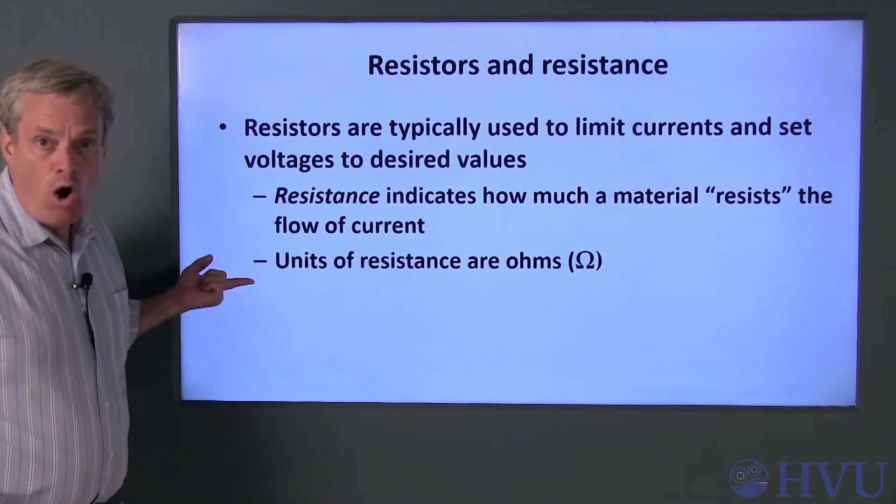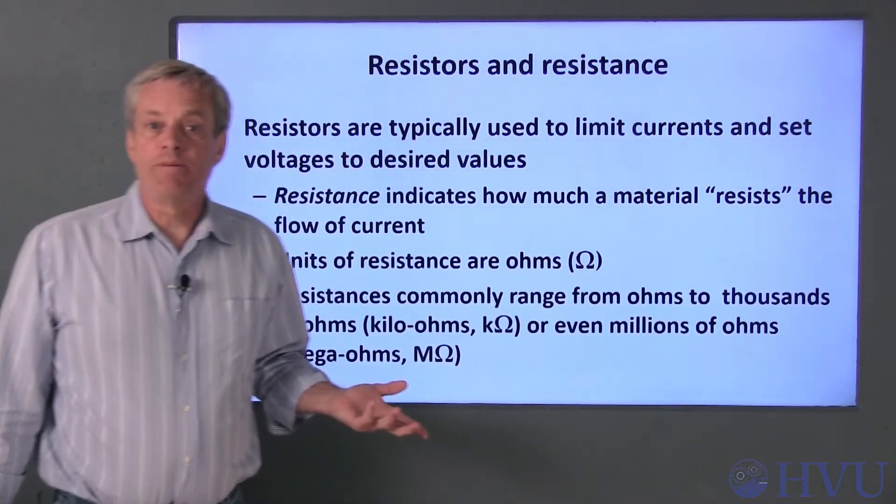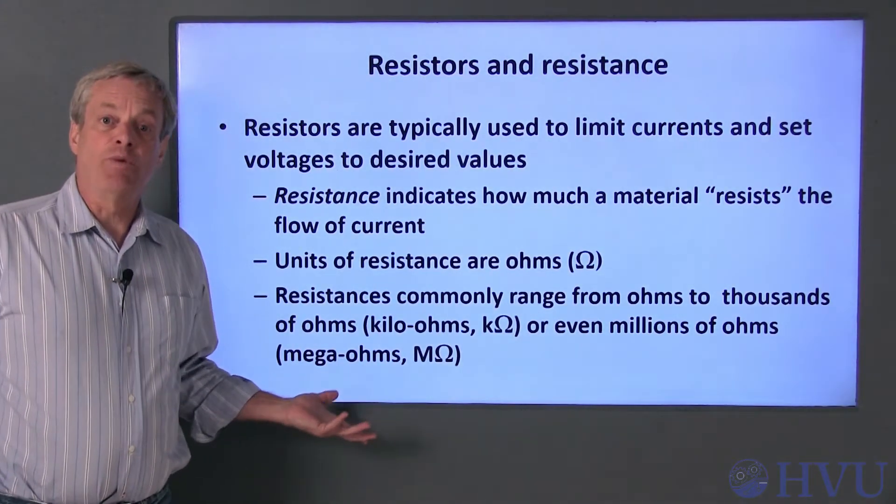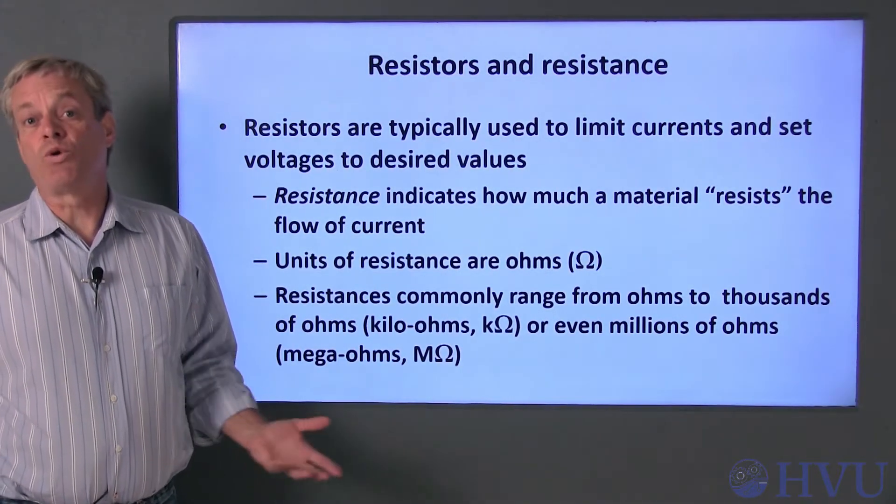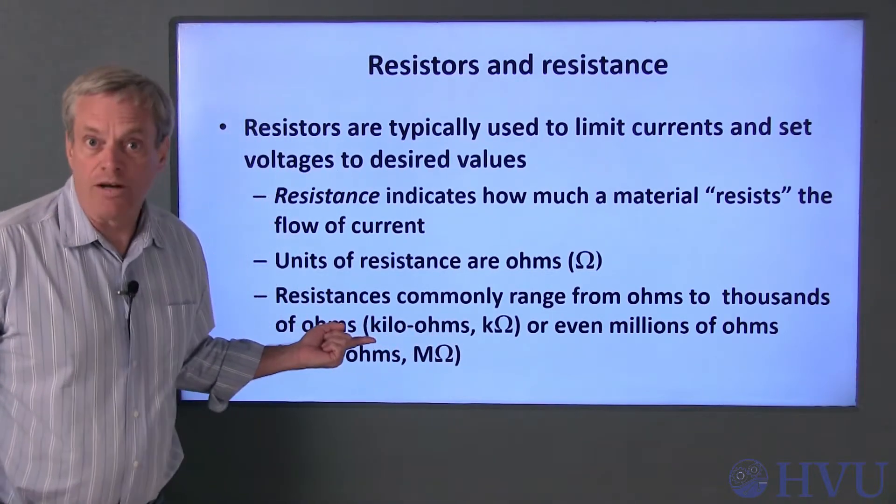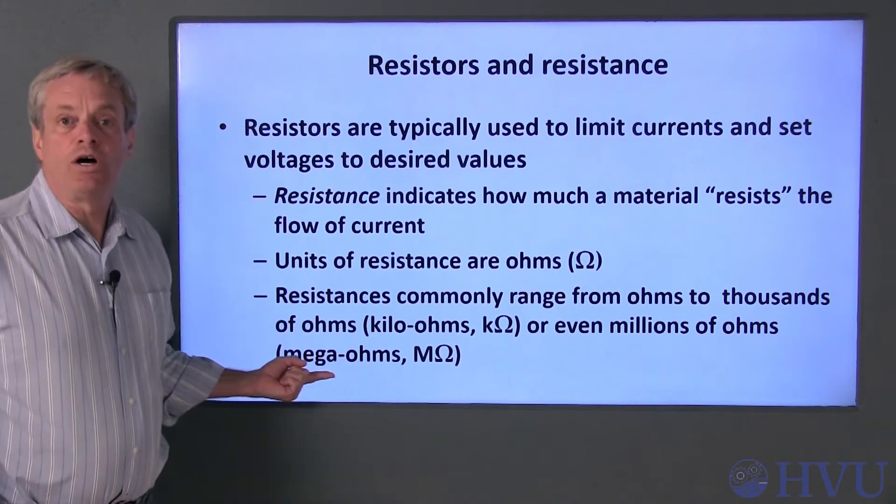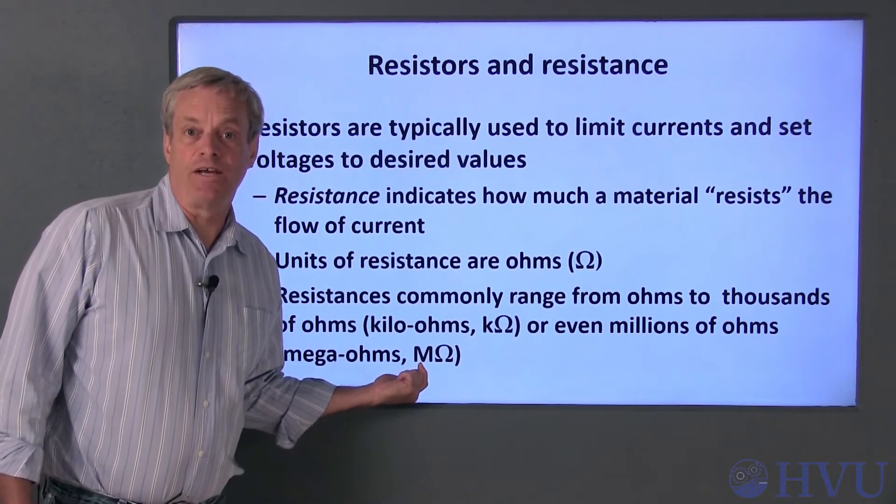Resistance has units of Ohms, which are represented by the Greek letter Omega. Typical resistance values can range from Ohms to thousands of Ohms or millions of Ohms. Thousands of Ohms are called Kiloohms and are represented by a K prefix, while millions of Ohms are called Megaohms and are represented by an M prefix.